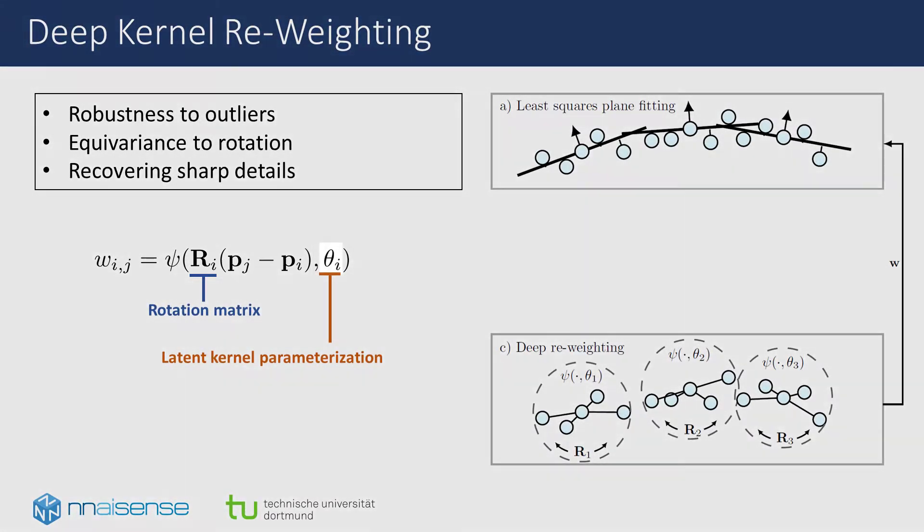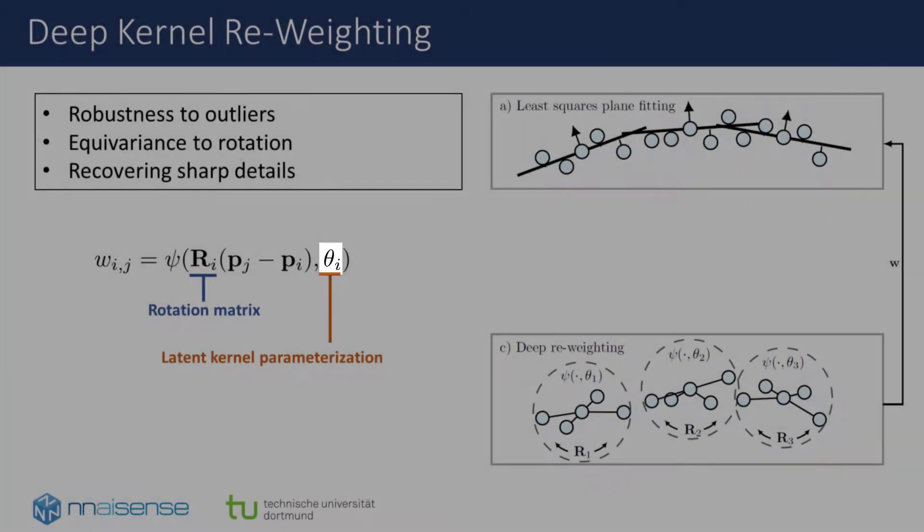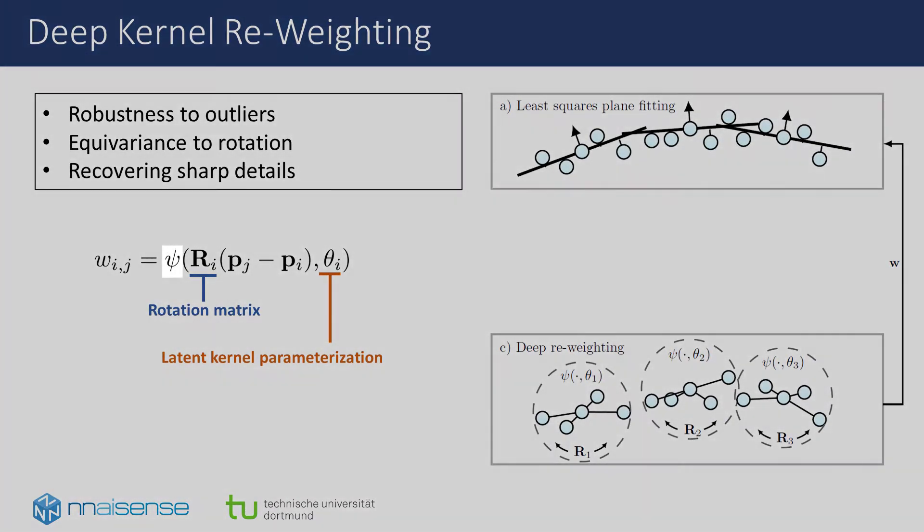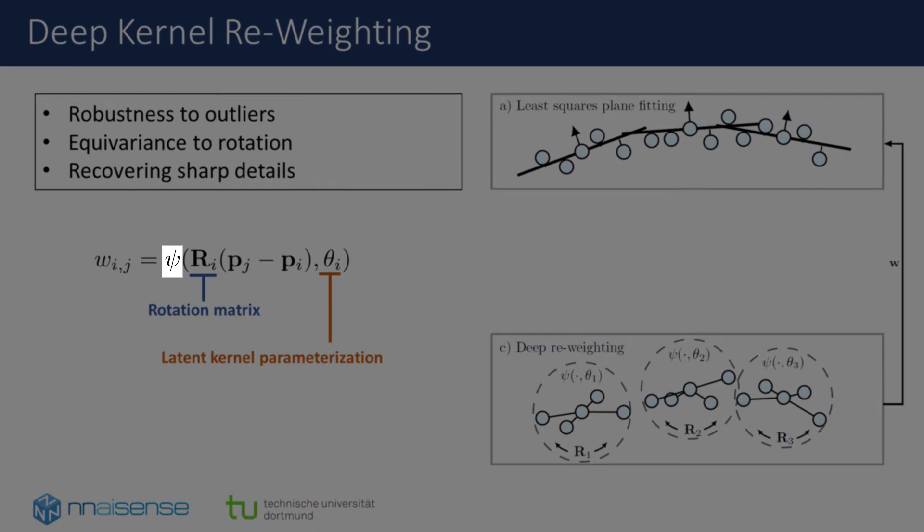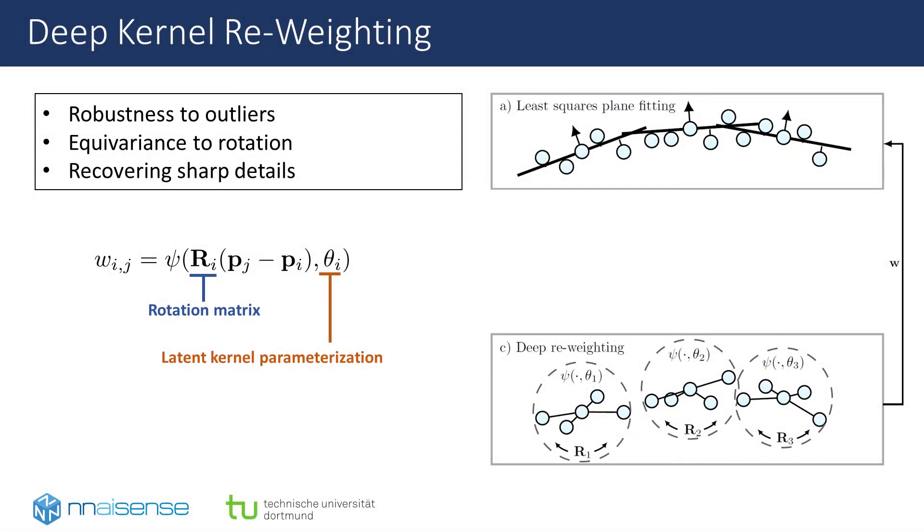The second input is a latent parameterization vector theta, containing features of the local point neighborhood. The kernel function itself is realized as an MLP, receiving the concatenated input vectors. We now tackle the question of how to obtain the quaternions R and the thetas individually for each point in the point cloud.